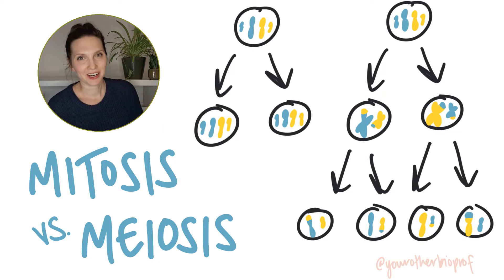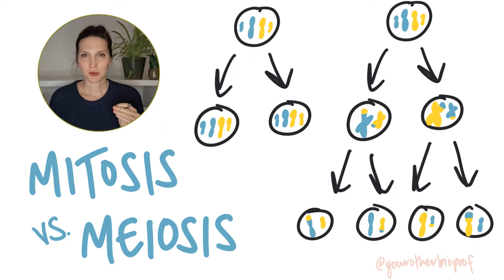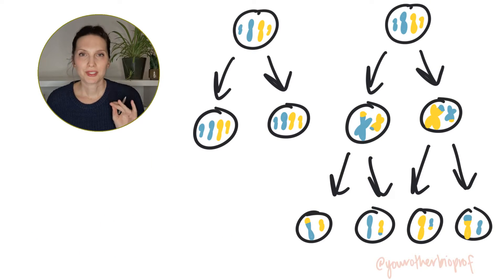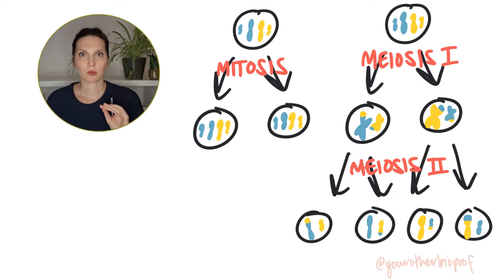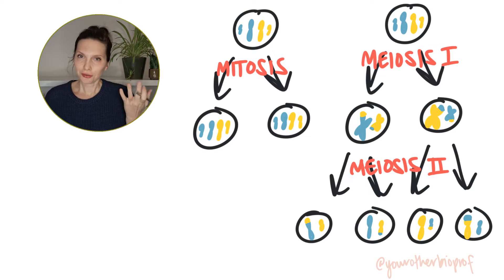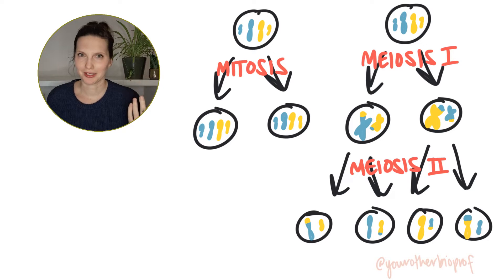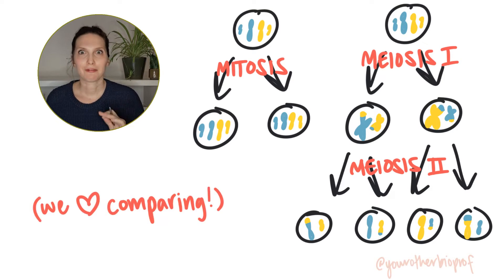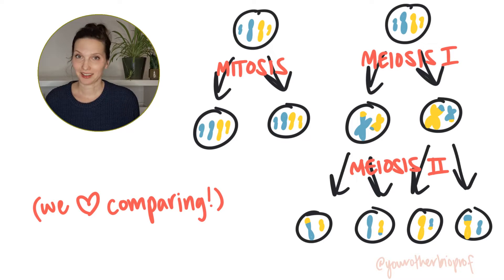Hi, biology friends. It's Sarah, your other biology professor. Let's talk about the differences between mitosis and meiosis. Mitosis and meiosis are two types of cell division, but there are some critical differences between the processes. You probably learned about them in the same unit, which means they're probably on the same test. And differences between processes make fantastic test questions. So let's dig in.